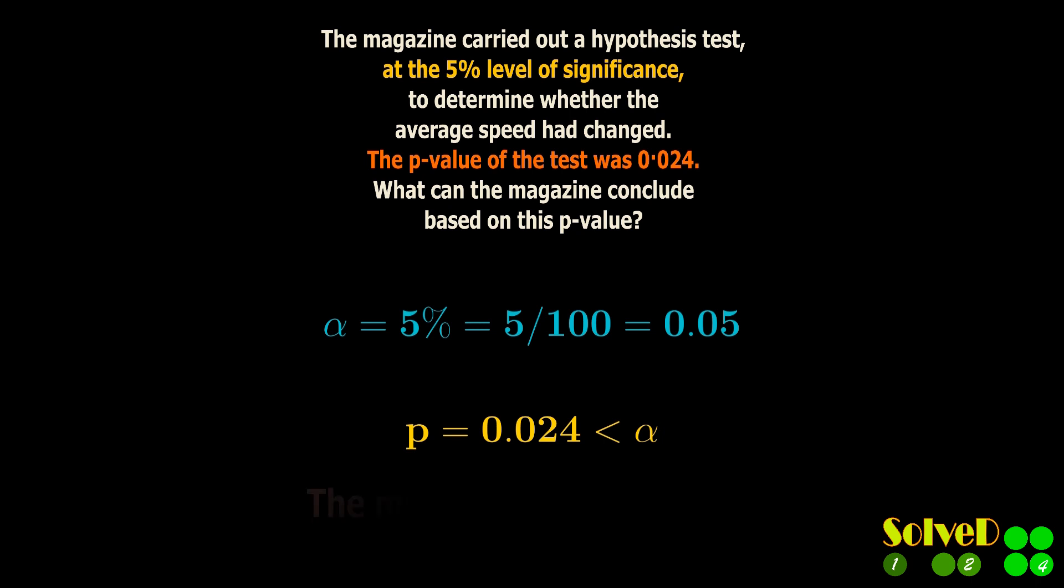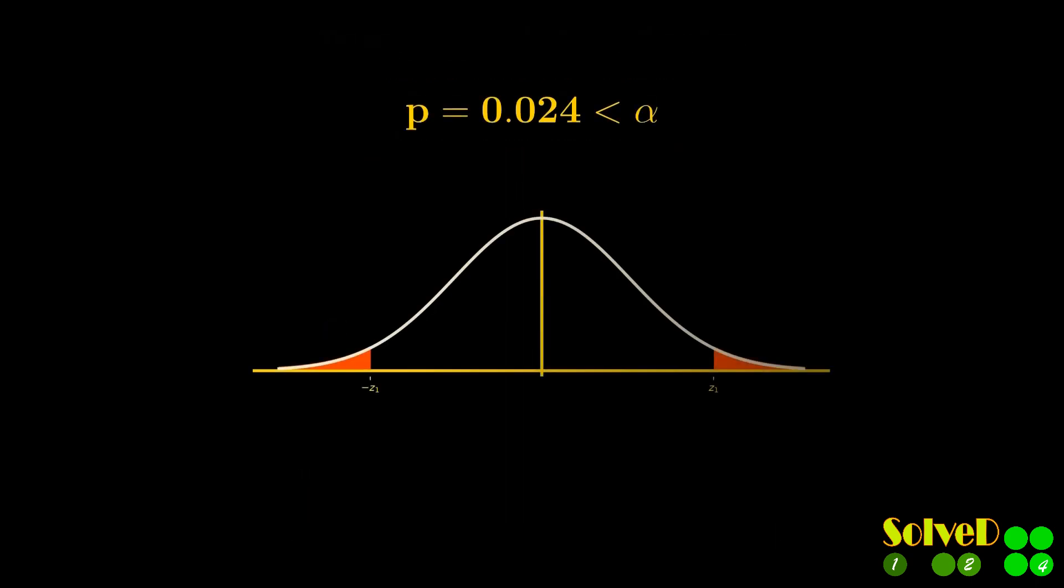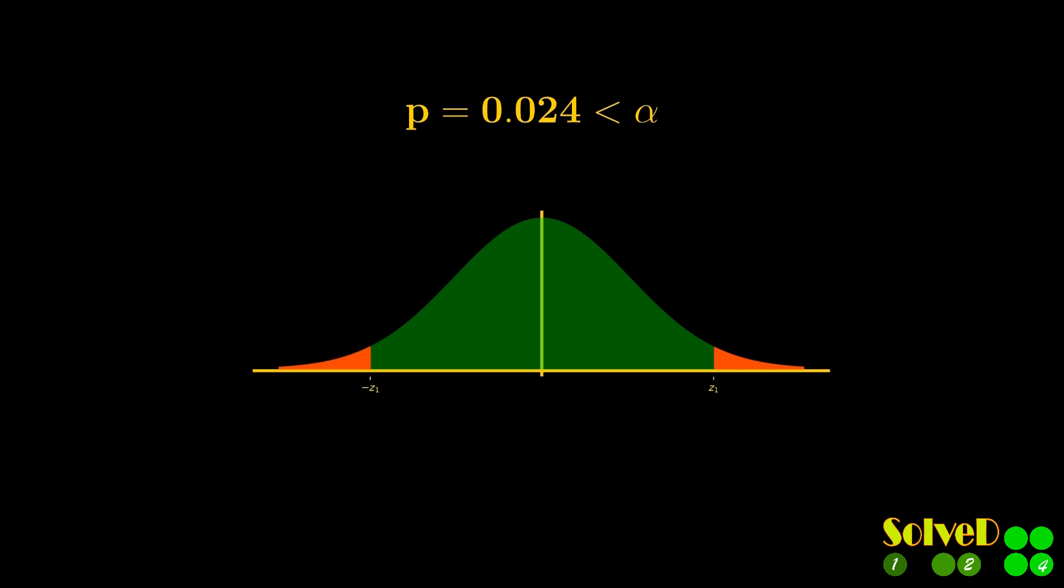Since the given p-value is less than alpha, we can conclude that the mean value has changed. Note that the given p-value is the collective value from the two tails of the standard normal curve.